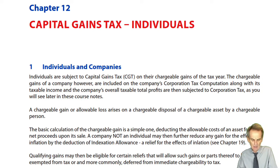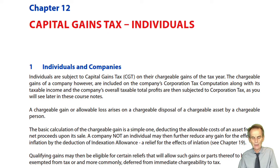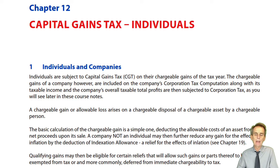Those types of income were subject, in the previous chapter, to a further charge to taxation — national insurance contributions. Now from Chapter 12, we turn our attention away from the taxability of income of the individual to the taxability of capital. There are two capital taxes that we'll be seeing in our forthcoming studies, starting here with capital gains tax. Individuals are chargeable to capital gains tax.